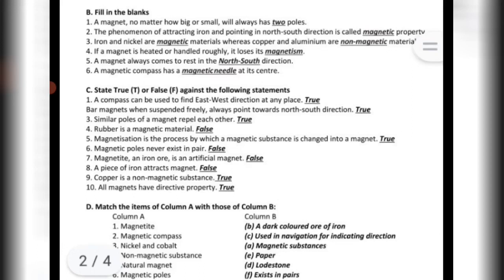Iron and nickel are magnetic materials, whereas copper and aluminium are non-magnetic materials.